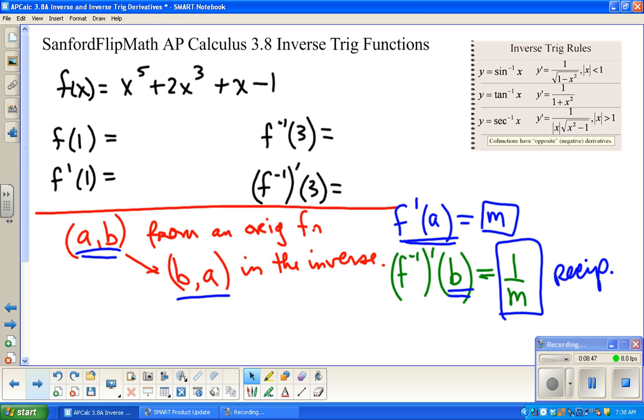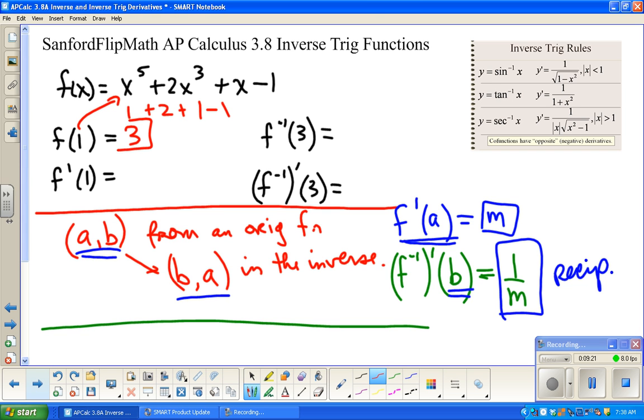We're going to do this example, and this is number 28 from page 170. We'll do this example just to illustrate that, and the idea is that finding the derivative of an inverse is actually pretty much just as easy as finding the derivative of the original. So let's just plot along here. f of 1, I'm just going to put one in here, so this is 1 plus 2 times 1 plus 1 minus 1, which is 3. To do f prime of 1, I actually have to do derivative. So f prime of x, this is 5x to the fourth plus 6x squared plus 1, and the derivative of the negative 1 is zero.